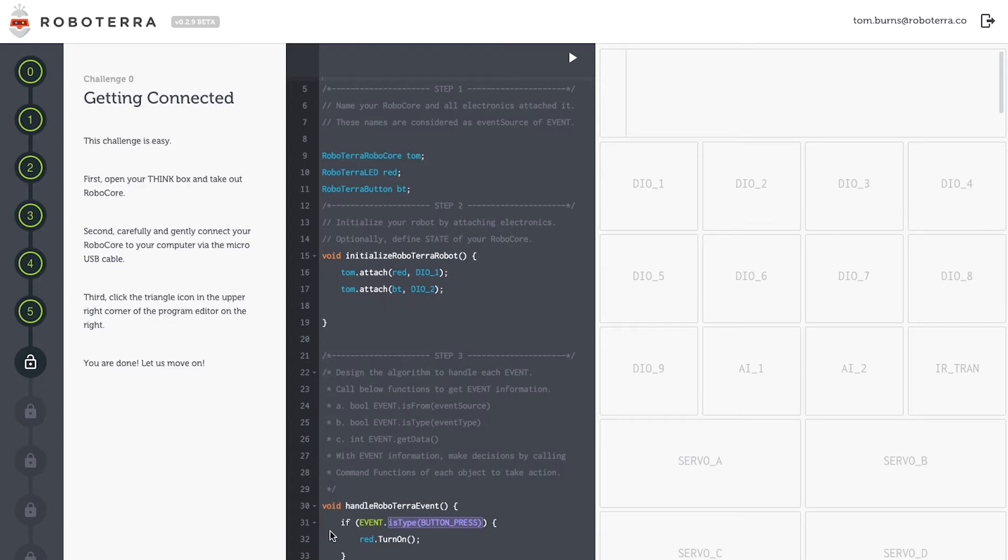Third, inside the handle RoboTerra event, I'll use a conditional statement to tell my robot what I'd like it to do.